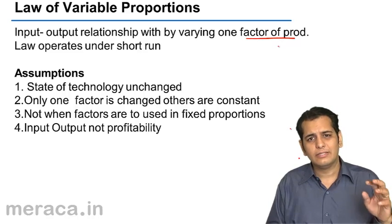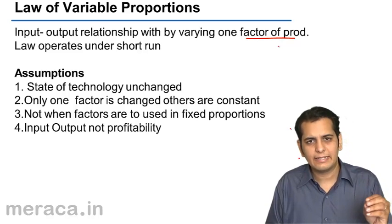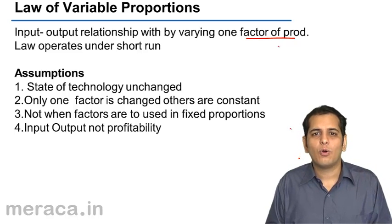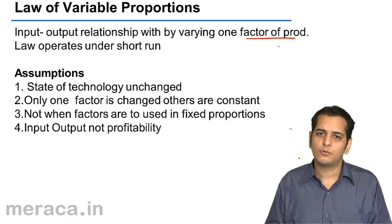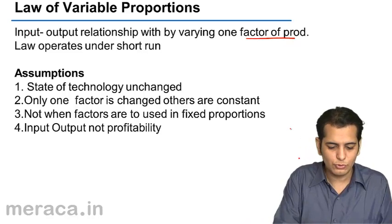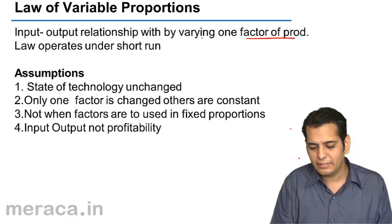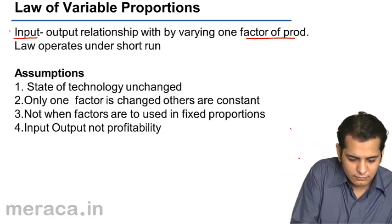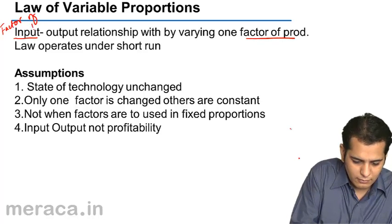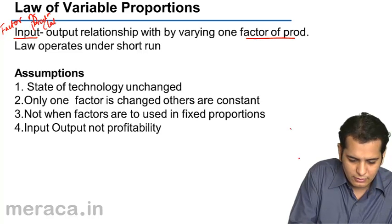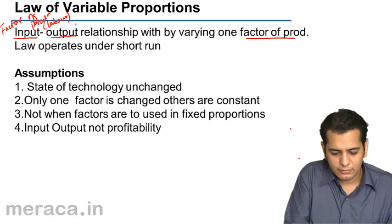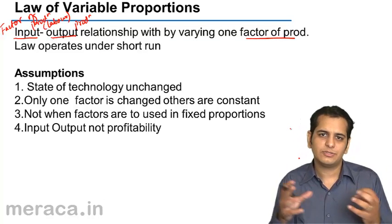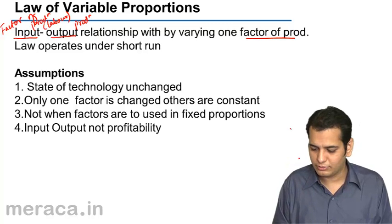In the law of variable proportions, we take labor as variable and see what is the effect of changing the quantity of labor employed on total output or total production. So the law is about the input-output relationship by varying one factor of production. Input is a factor of production — that is labor here. Output is production or total production. The relation between factors of production and total output by changing one factor of production — again, labor.